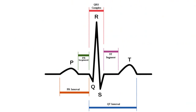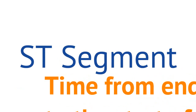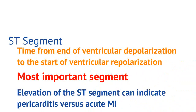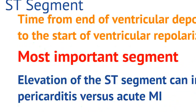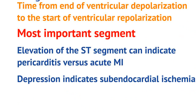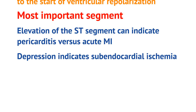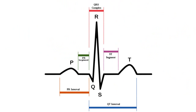Now let's take a look at the ST segment. The ST segment ranges from the end of the QRS complex to the beginning of the T-wave. It represents the time from the end of ventricular depolarization to the start of ventricular repolarization. I consider it the most important segment on the EKG because it indicates severe pathology if it's abnormal. An elevation of the ST segment — a rise from baseline — can indicate either pericarditis, if there are diffuse ST segments with PR segment depression, versus an acute heart attack. Depression of the ST segment can indicate subendocardial ischemia, meaning the patient likely has significant coronary artery disease and needs to be further worked up.